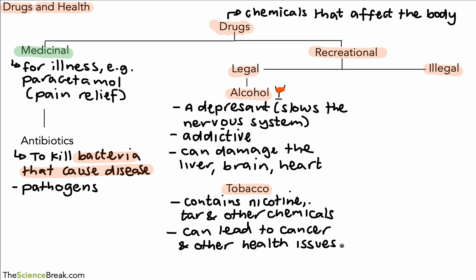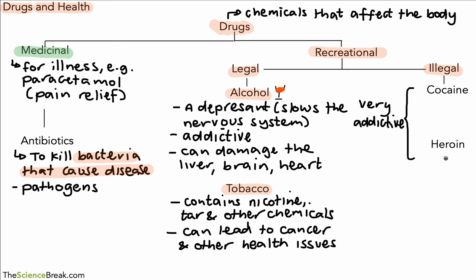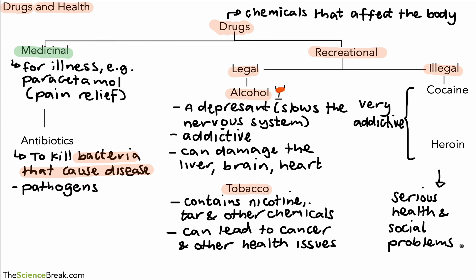In terms of illegal drugs, we have cocaine and heroin. These are quite severe drugs and are very addictive — you don't have to take much before you find you're addicted to them. Not only are they addictive, but they can also lead to serious health issues. They also lead to social issues — for example, a lot of money could be spent on those drugs, and there are effects on other parts of life as well.